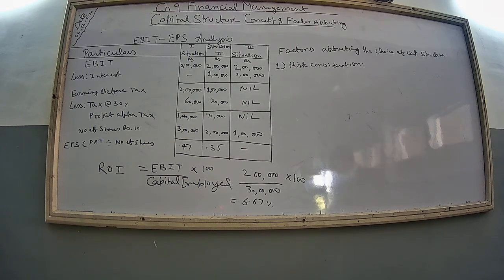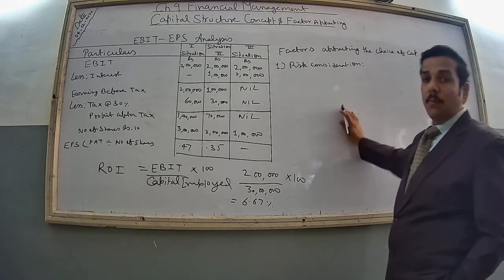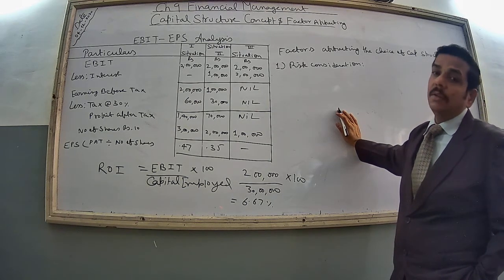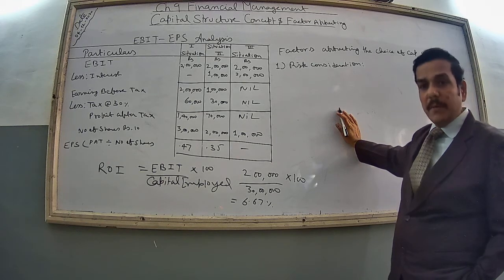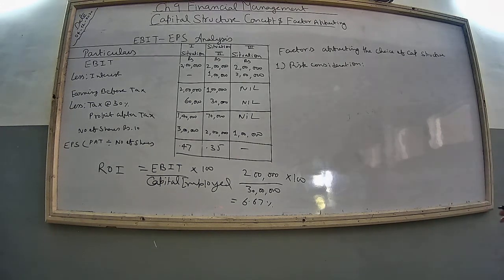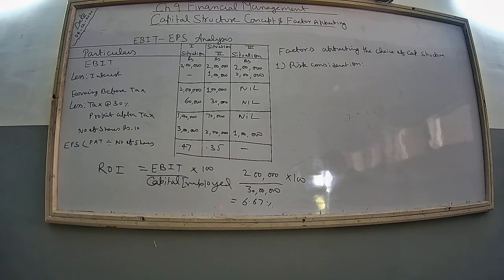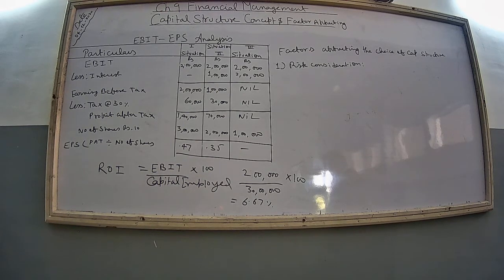Whenever you are using more and more debt, the interest burden on your finances will rise, so you have to keep that under control. Payment of interest, preference dividend, and repayment obligations all constitute financial risk. Apart from financial risk, every business also has operating risk — depending on fixed operating costs like building rent, insurance, premium, and salary. Higher fixed operating costs result in higher business risk and vice versa. Total risk depends upon business risk and financial risk. If a business has lower operating risk, its capacity to use debt is higher.